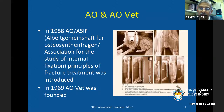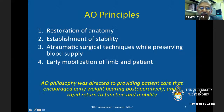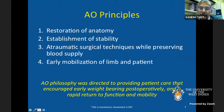The AO principles included: first, restoration of the anatomy of the bone — anatomical reconstruction of the fractured bone; second, establishing stability or rigid fixation; third, atraumatic or minimally traumatic surgical techniques to preserve blood supply; and fourth, early mobilization of the limb or patient postoperatively for recovery.